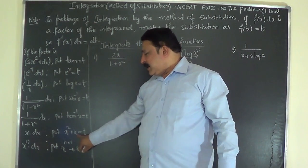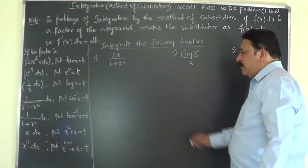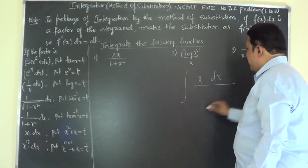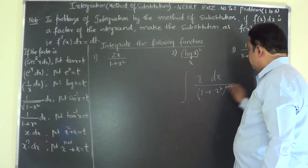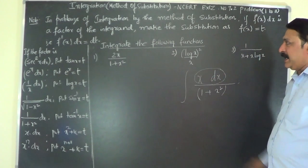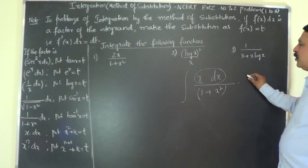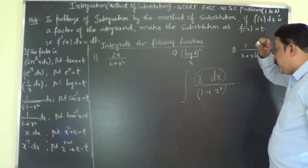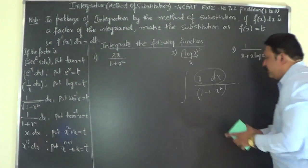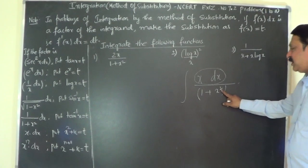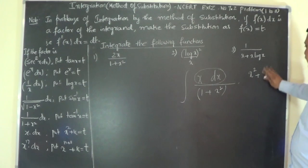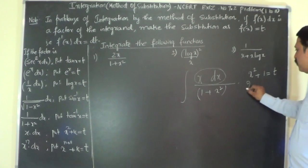For example, consider the integral of x dx divided by (1 + x²). You can see that x dx is present in the problem, so you put x² + constant = t. In this case the constant is 1, so put x² + 1 = t. The problem will necessarily consist of an x² term, so you identify the denominator as the substitution candidate and set it equal to t.